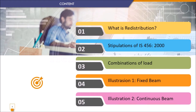Our focus area today is the exact meaning of redistribution, then what stipulations of IS codes are there so that the redistribution process is understood, how loads are combined as per IS code, and how these criteria are included in the analysis of problems. We are going to take two problems today: one is a fixed beam and the other is a continuous beam.